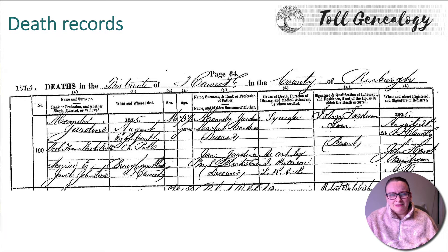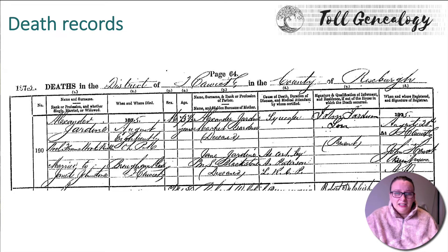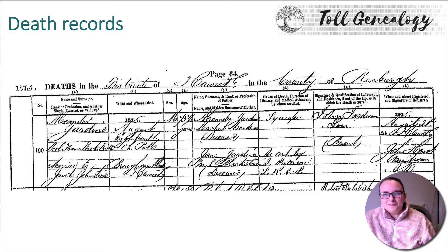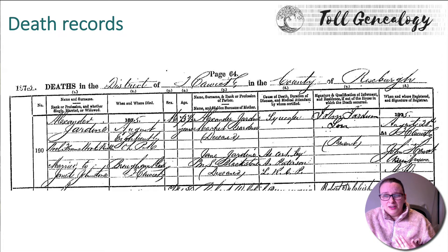As you can see, this Scottish death record shows who the person was, their occupation, who their wife was, the date and place of death, and their age — but crucially it also tells you who their parents were. In the middle column we have Alexander Jardine, a market gardener. His father was also a market gardener and his mother was Jane Jardine, maiden name Blackstone. That's really useful information we wouldn't have otherwise known without this death certificate.